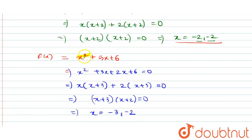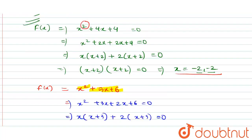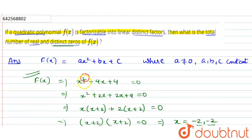From here the value of x is -3 or -2. In the quadratic polynomial x² + 5x + 6, the number of distinct real zeros is 2 — that is, -3 and -2. So we can say that the number of real and distinct zeros possible in a quadratic polynomial is 2. Hence this is the solution.